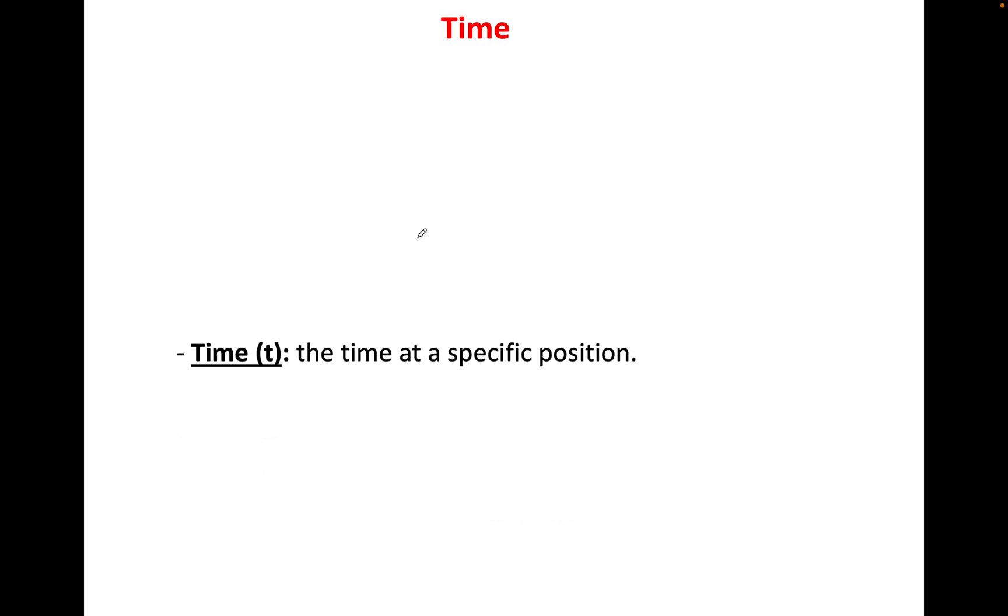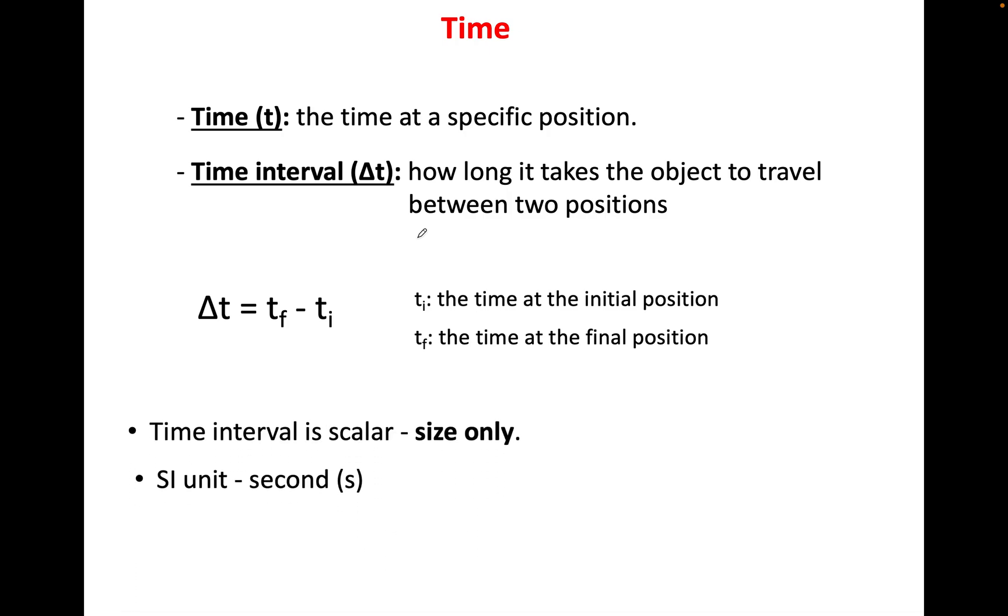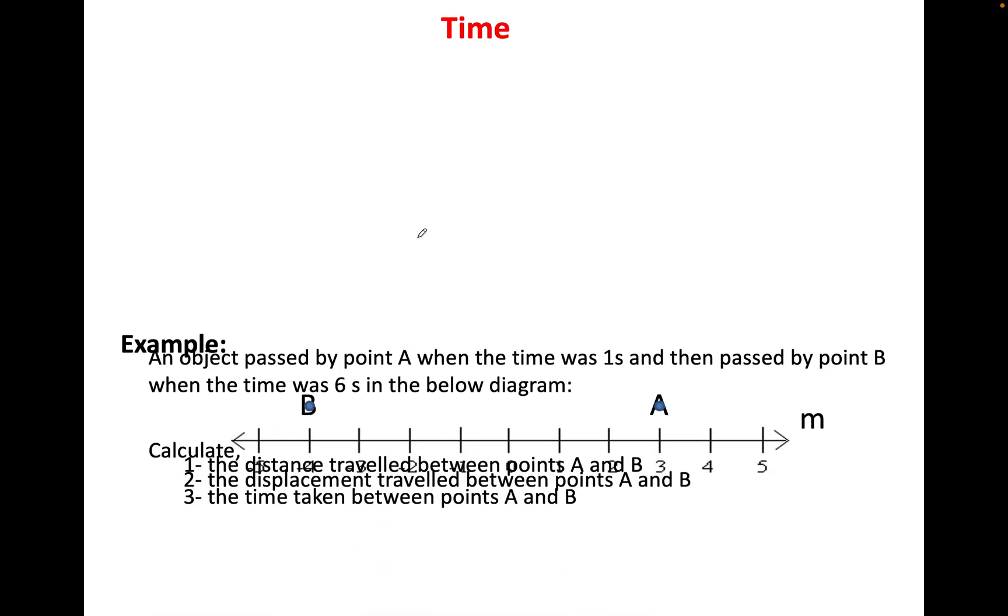Next and final thing is time. It's the time at any specific position. The time interval simply means how long it takes to travel between two points. Final minus initial. If you have two times in a question like this, final minus initial. It is a scalar, so you only need to know the size. And the unit is seconds. Not minutes or hours. Of course, seconds.